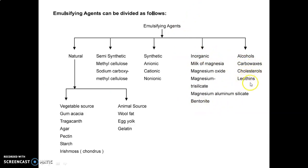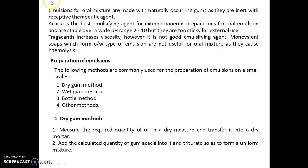Inorganic emulsifying agents include milk of magnesia, magnesium oxide, magnesium trisilicate, magnesium aluminum silicate, and bentonite. Alcohols include carbowaxes and cholesterol lecithins. Emulsions for oral mixtures are made with naturally occurring gums as they are inert with the respective therapeutic agent. Acacia is the best emulsifying agent for extemporaneous preparation for oral emulsions and is stable over a wide pH range of 2 to 10, but is too sticky for external use.